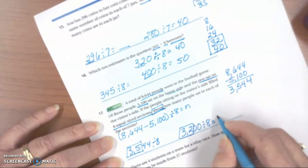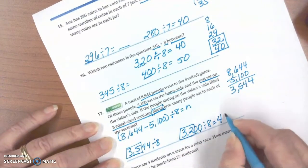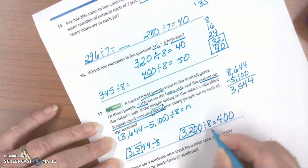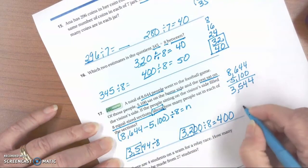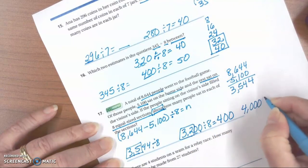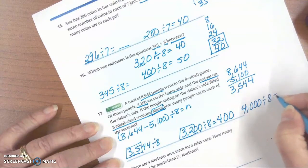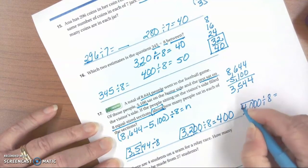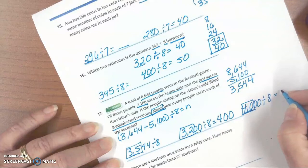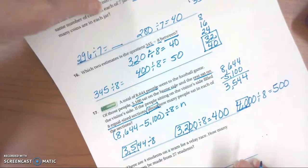35 is between 32 and 40. So we can change this to 3,200 divided by 8, and our basic fact is 32 divided by 8, which is 4, and add our 0's because that's 32 hundreds. Or we could say 4,000 divided by 8, and 40 hundreds divided by 8 would be 500. There's your estimates for that one.